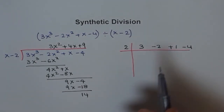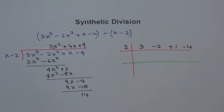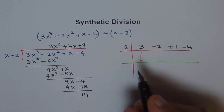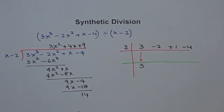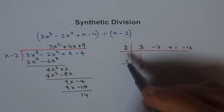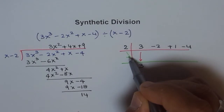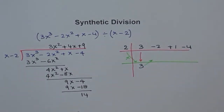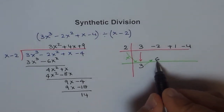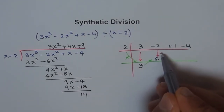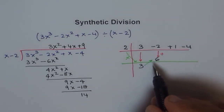We draw a line and begin the process. First, bring down the leading coefficient 3 as it is. Then multiply 2 by 3 to get 6, and write that under the next coefficient. We add minus 2 and 6 to get 4. That 4 is the next coefficient in our result.